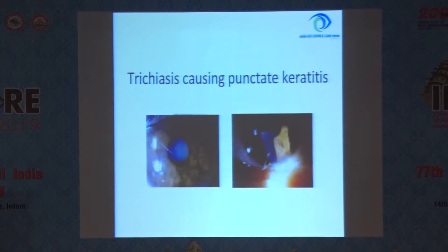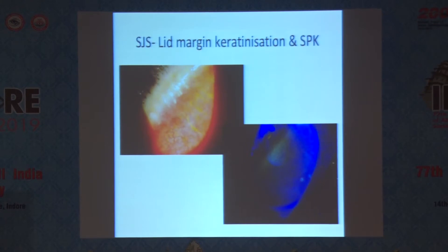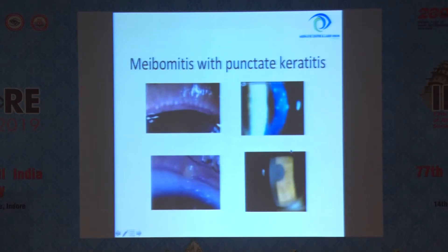This is a case where trichiasis is causing punctate keratitis. This is a case of Stevens-Johnson syndrome where you can see the lid margin keratinization — this is an initial phase, but diagnostic is punctate keratopathy in the region where the eyelid is rubbing the cornea. Meibomitis can be associated with punctate erosion, so eyelids have to be examined.